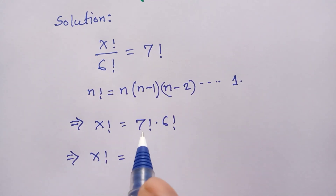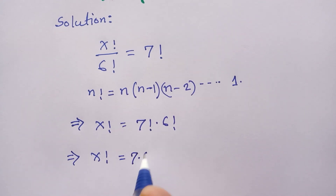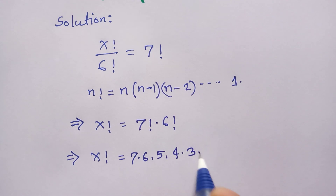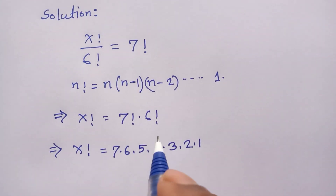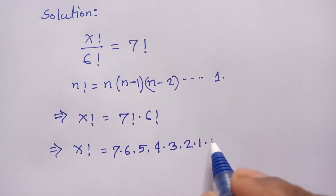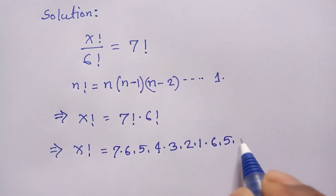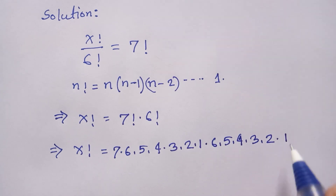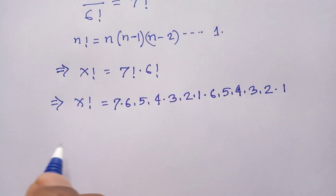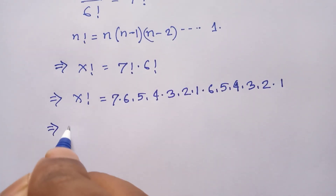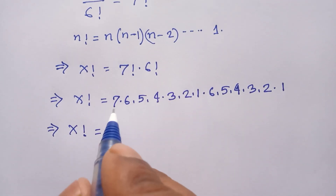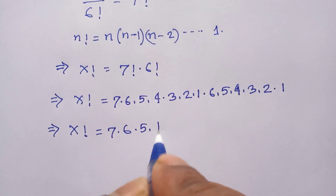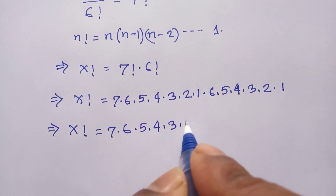Now we can write x factorial is equal to, according to this formula: 7 factorial is 7 times 6 times 5 times 4 times 3 times 2 times 1, and 6 factorial is 6 times 5 times 4 times 3 times 2 times 1.